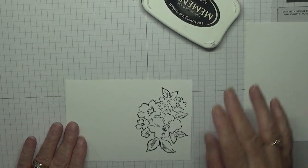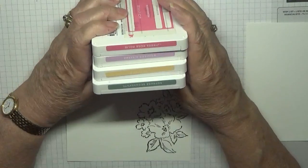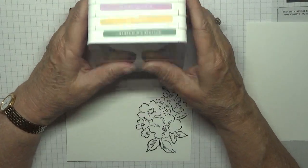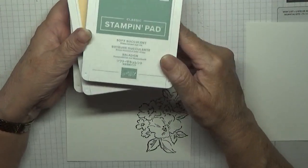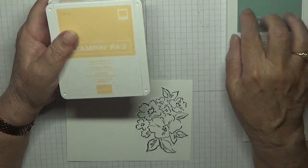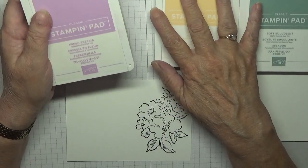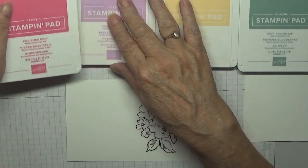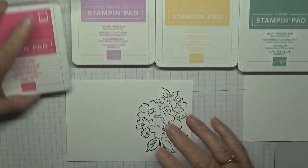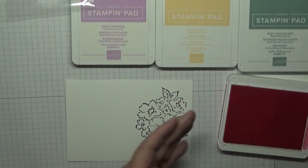And then we're going to colour in. Not colour in. We're going to stamp in the colours using the stamps. So I have got soft succulent for the green leaves, pale papaya - these are all the ink colours I'm going to use - fresh vericia and polished pink.